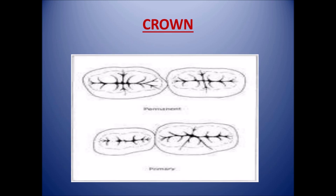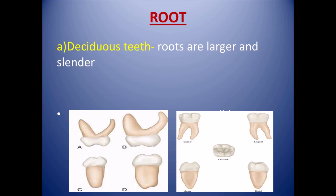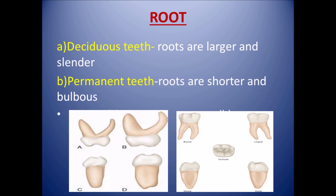This diagram clearly indicates the contact area between two adjacent teeth in permanent and primary dentition. In permanent dentition, the contact area is very less as compared to primary dentition. Coming to the root, in deciduous teeth roots are larger and slender, but in permanent teeth roots are shorter and bulbous, as clearly indicated in the diagram.